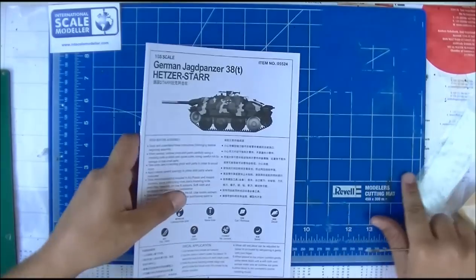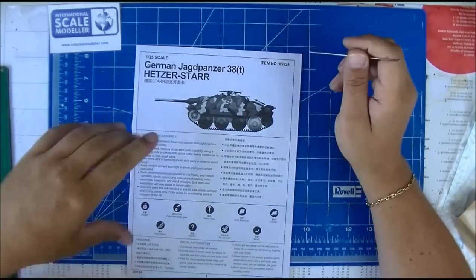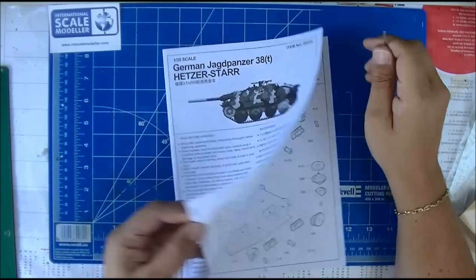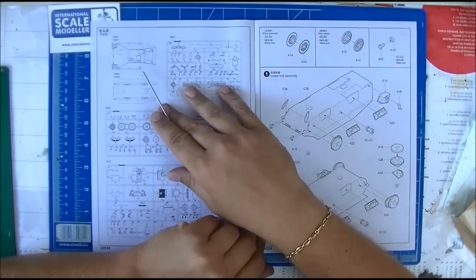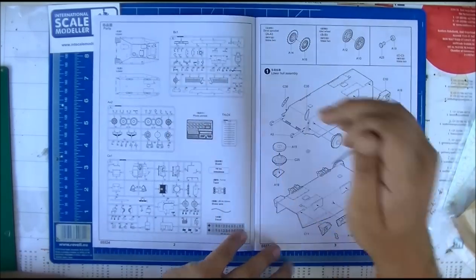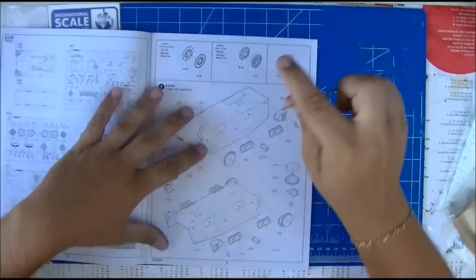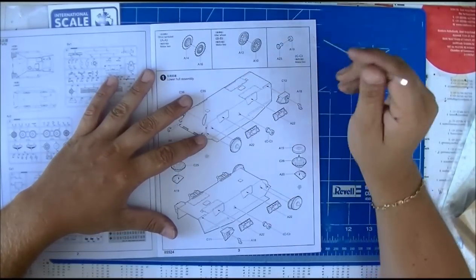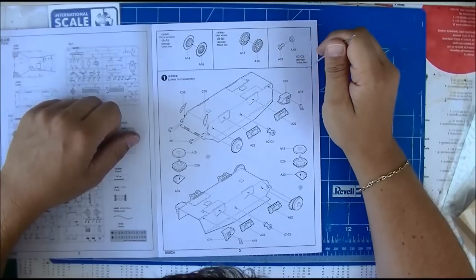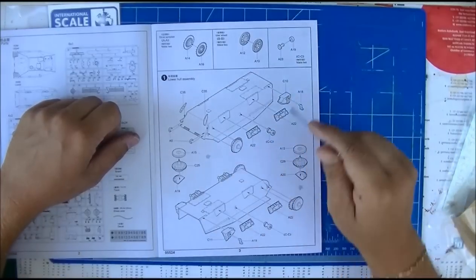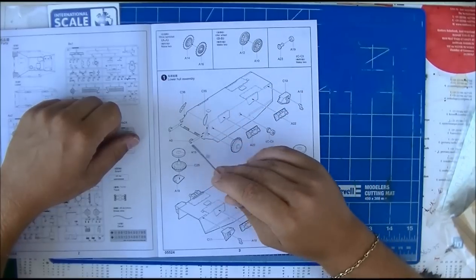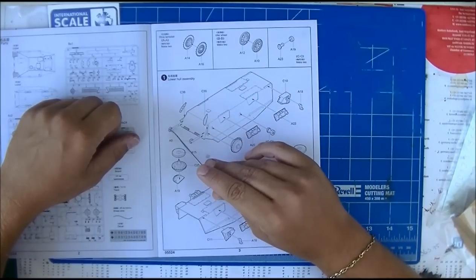Let's start with the instructions. Sprues, the sprue map. Sprues are all numbered, so that's a good thing. Got only a couple of sprues. Drive sprocket, idle wheel, return rollers. You're going to attach the suspension points to the hull.